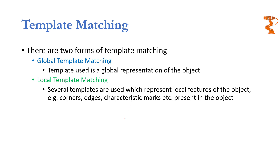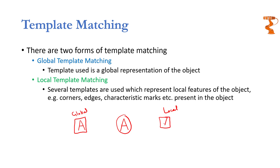For example, if we have an object we want to find in our image and we have a template for it, in global template matching we sweep the complete template over the image. But in local template matching we might have smaller templates — for example one signifying an endpoint, another signifying a different area, and another signifying another endpoint — so instead of one complete template we are using three smaller templates to find objects containing those three kinds of features.